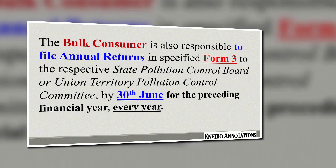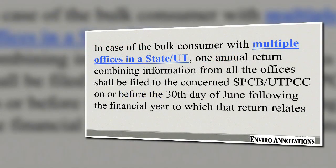For example, for the financial year starting 1st April 2019 and ending 31st March 2020, the submission date will be the 30th day of June 2020. In case of a bulk consumer with multiple offices in a state, one annual return combining information from all offices shall be filed to the State Pollution Control Board or Union Territory Pollution Control Committee on or before 30th June for the preceding financial year.